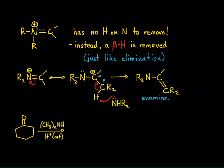Let's look at an example. Here I have cyclohexanone, a ketone, reacting with a secondary amine — dimethylamine — using an acid catalyst such as para-toluenesulfonic acid. The product is an enamine: the carbonyl carbon takes on a double bond between it and a beta carbon, and it forms a carbon-nitrogen single bond. Notice the nitrogen still has the two methyl groups coming off of it. That is an enamine.